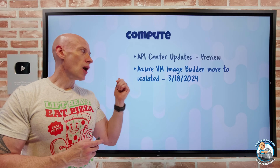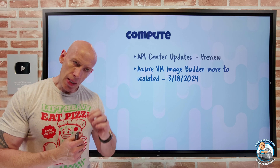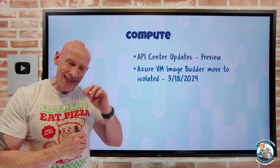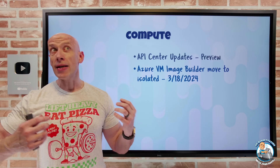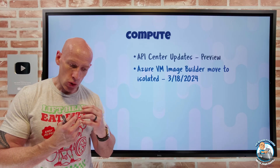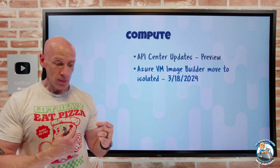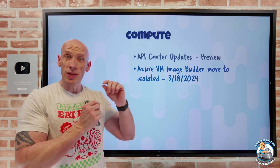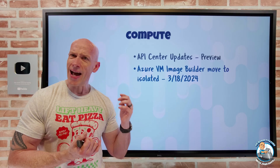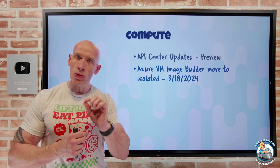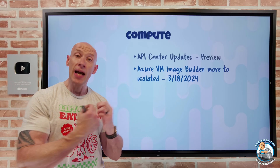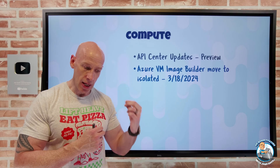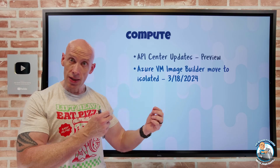Azure VM Image Builder is moving to isolated mode in three days. Currently it uses a shared set of infrastructure, but now it's moving to dedicated resources in your subscription, restricted to compute and network resources within that subscription. This gives enhanced security. You don't have to do anything, but you'll see temporary additional resources — an Azure Container Instance, a VNet, an NSG, a private endpoint. If you have Azure Policy restricting those resource types, that may block things. Also ensure Microsoft.ContainerInstanceResourceProvider is registered in your subscription.